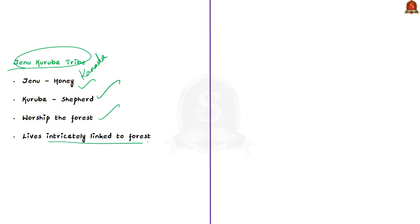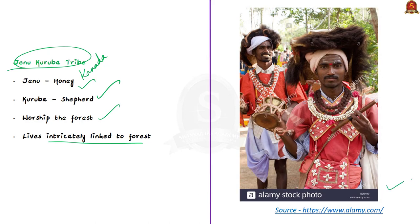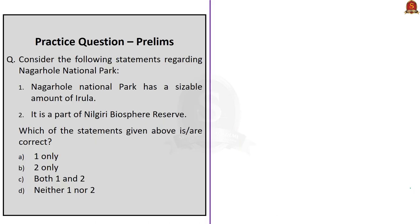With this information, we came to the end of the discussion on Nagarhole. We saw about the origin of Nagarhole as a national park, its location, its geography, and its major flora and fauna. Let us move on to the next segment.